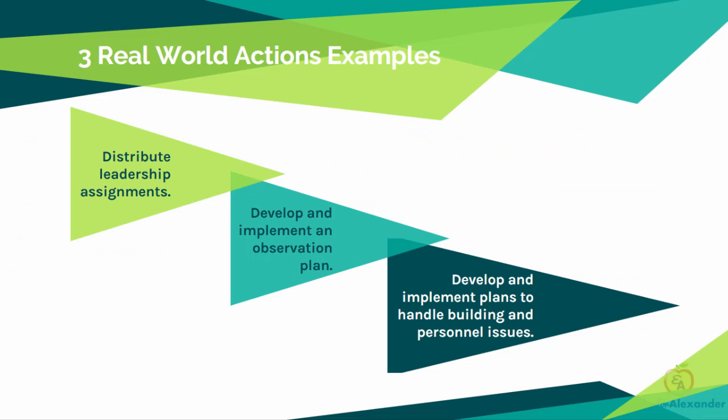Three real-world actions you can do today for Standard 3: First, start distributing leadership assignments. Second, develop and implement an observation plan — when are you and your committee walking around, looking at how things run, noticing what happens when the bell rings? Third, develop and implement plans to handle building and personnel issues — how are teacher conflicts reported, who handles them, what safety plans do you need to have developed on your campus?